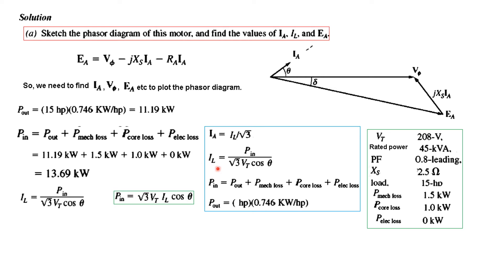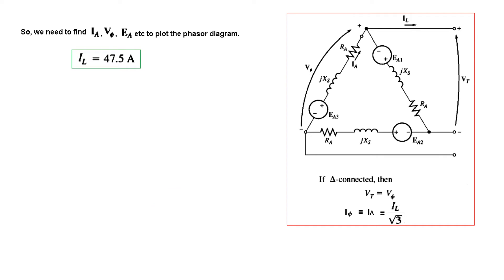Now we use the formula for line current Il, derived from: P_in = √3 × Vt × Il × cos(θ). Rearranging gives Il = P_in / (√3 × Vt × power factor). Plugging in: P_in is 13.69 kW, Vt is 208 V, and power factor is 0.8. This gives a line current of 47.5 amperes.